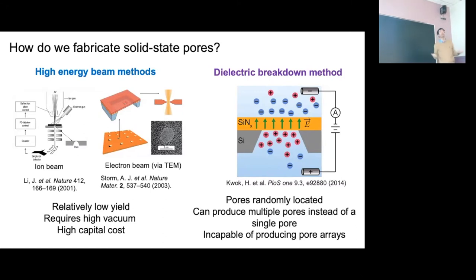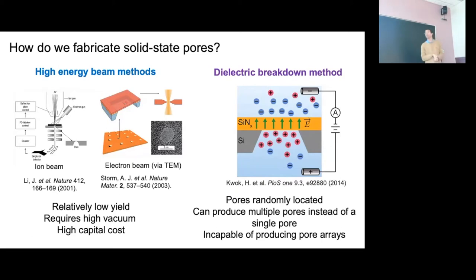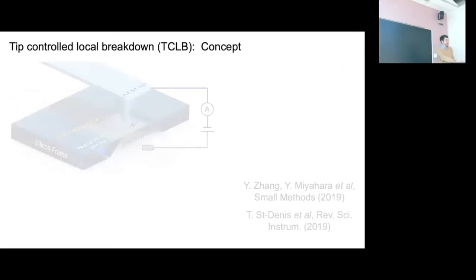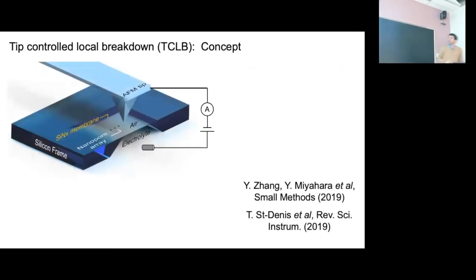Another problem not often discussed: this technique can produce multiple pores instead of one, which is a huge problem because it creates a lot of noise, reduces your signal-to-noise level. And it can't produce pore arrays — if I make one pore and want another, all the current gets dumped into the existing pore. So it can't produce more than one.